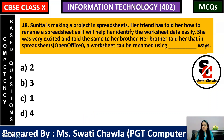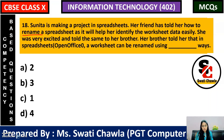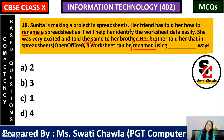Next: Sunita is making a project in a spreadsheet. Her friend told her how to rename a worksheet, as it helps identify the worksheet data easily. Her brother told her that in OpenOffice Calc, a worksheet can be renamed using how many ways? The correct answer is option B — that is 3.